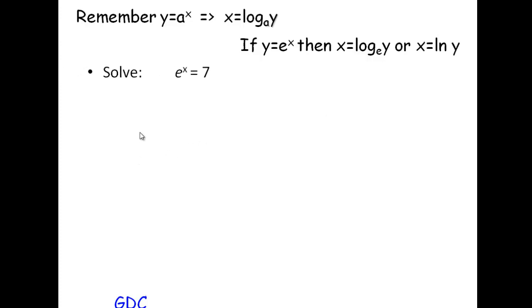So for example we're solving e to the x equals 7. We could use trial and improvement, it would take us quite a while to get to x equals 1.95, or we could use our laws of logs.